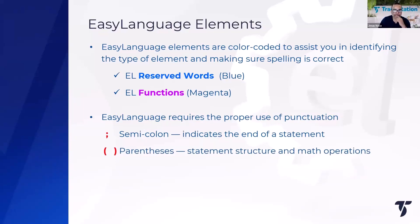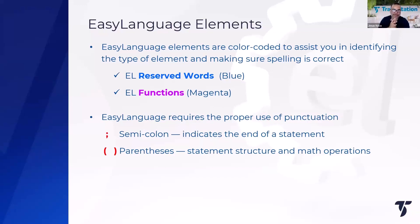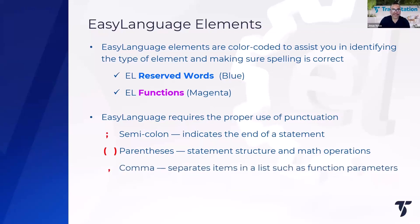We also use parentheses a lot to separate parameters within a function. For example, the 'average' function needs two parameters: the value being averaged and the number of periods. Those two parameters are separated by a comma. Whenever you use a function, you need parentheses to supply the parameters. We also use parentheses to control the order of operations in a mathematical formula.